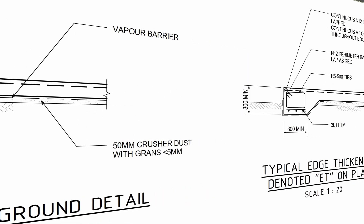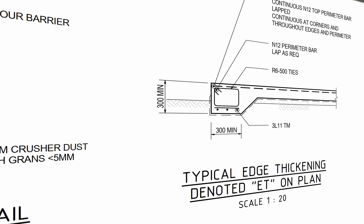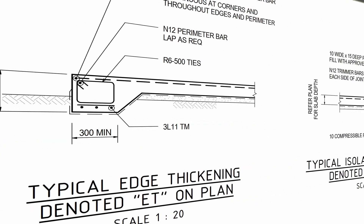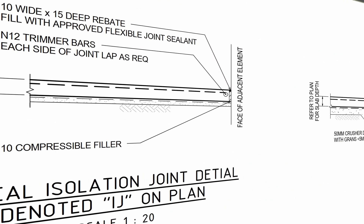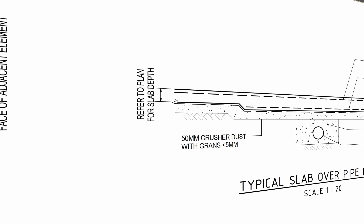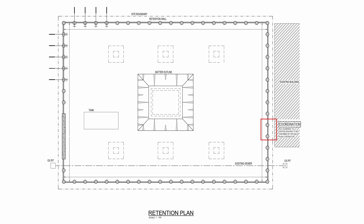You also have your standard details — typical details across all drawing sets. Depending on the company you're working for, they could be at the start of the documentation set or at the end, but they're generally grouped together. Now if we first start looking at this bulk excavation drawing, you can see a number of things.